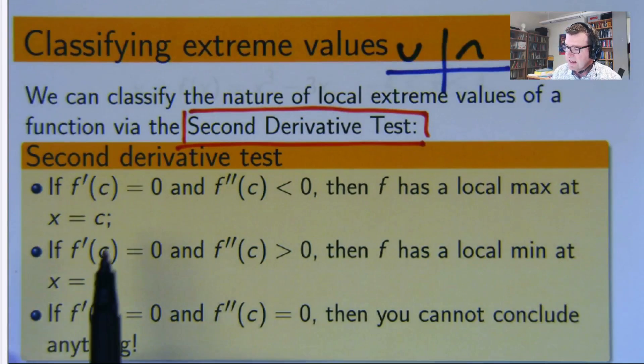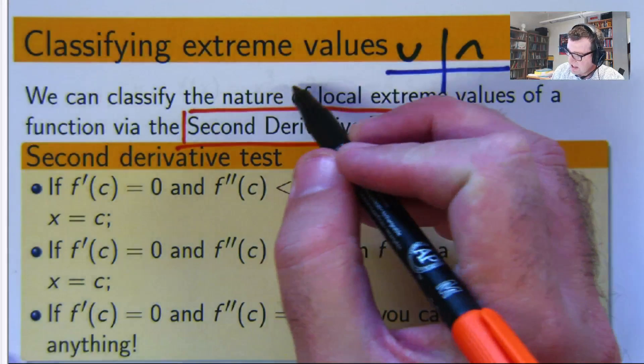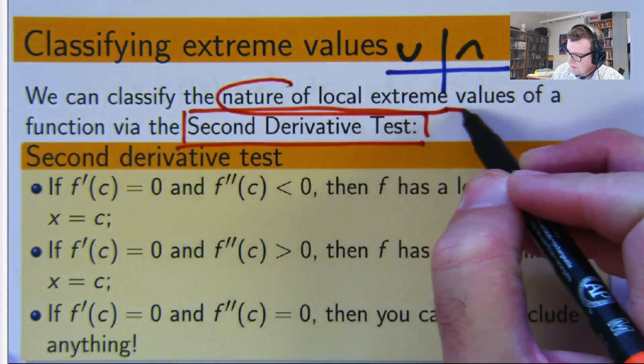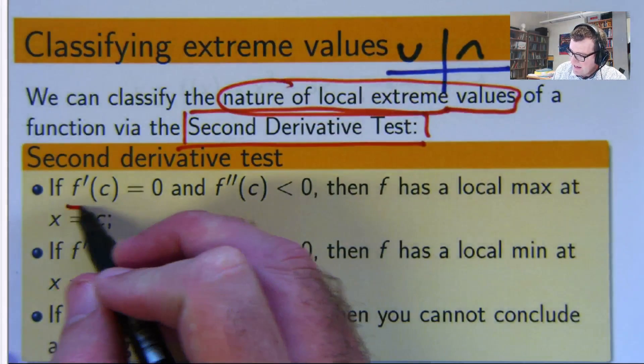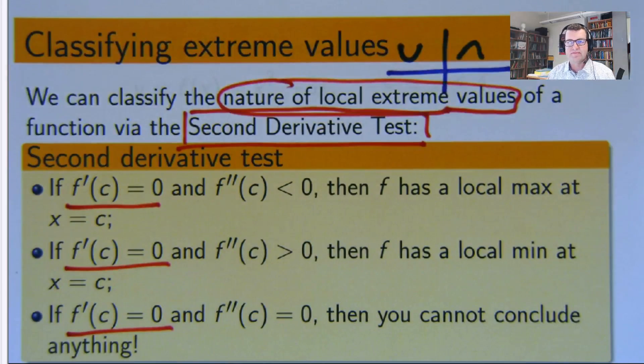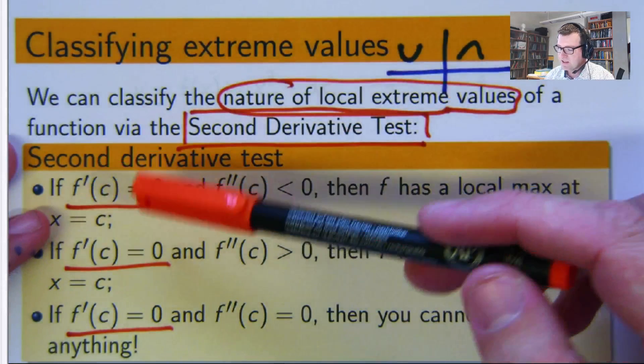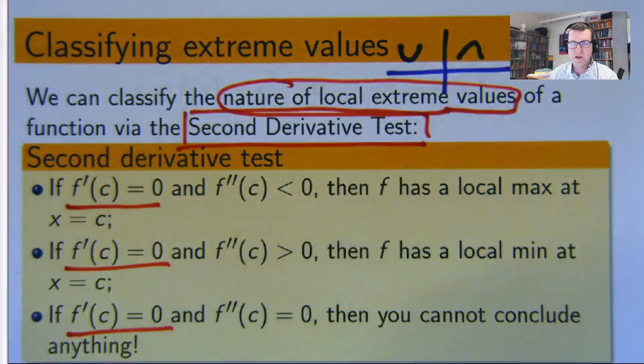So basically, the second derivative test tells us about the nature of local extreme values. And suppose that the derivative at this point is zero. So in other words, we're working at critical points here. We've found some critical points and now we're doing something with them.